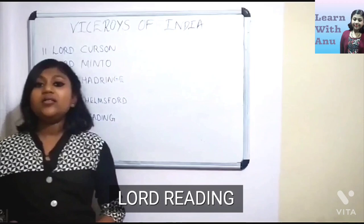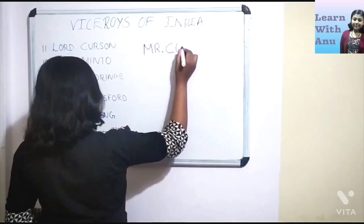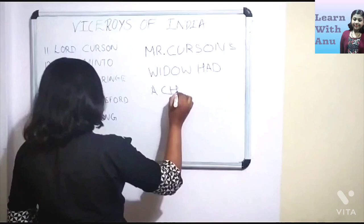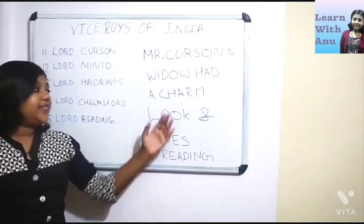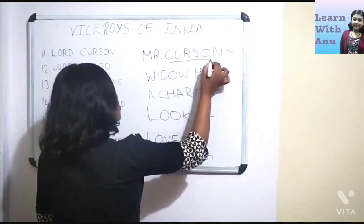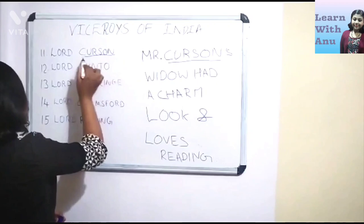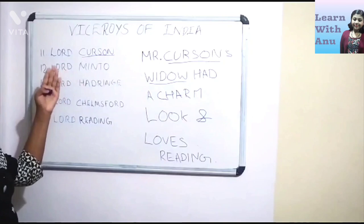Now let's get into the clue. Here: 'Mr. Curzon's widow had a down look and louse lady.' Here, 'Curzon' mentions our 11th Viceroy Lord Curzon. The word 'widow' mentions Lord Minto.